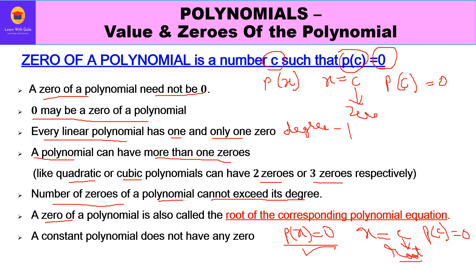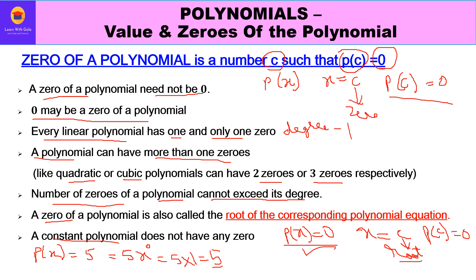The zero of a polynomial is also called the root of the corresponding polynomial equation: if p(c) = 0, then c is the root of p(x) = 0. Finally, a constant polynomial does not have any zero. A constant like 5 involves x raised to power 0, so its value is always 5 — it can never be 0. Therefore a constant polynomial has no zero, since the value of the polynomial can never equal 0.